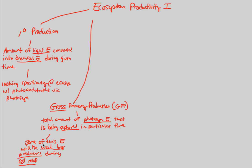You cannot assume that just because something utilizes photosynthesis, it does not utilize cellular respiration — that's absolutely wrong. Plants, though they convert sun energy into chemical energy, also need to break down their own glucose production via cellular respiration. When they do this, they take some of that converted energy for themselves. We call this autotrophic respiration, R sub A.